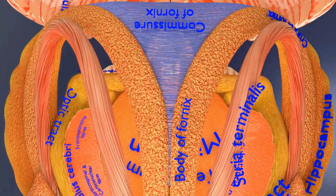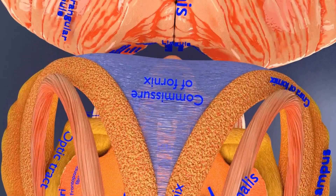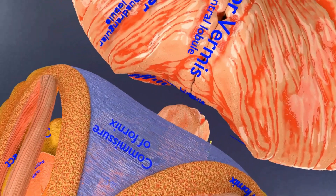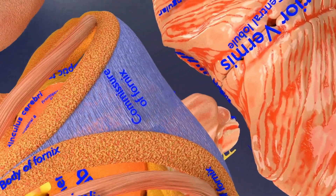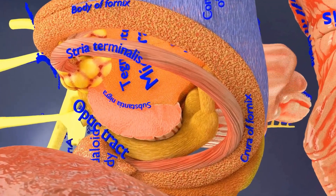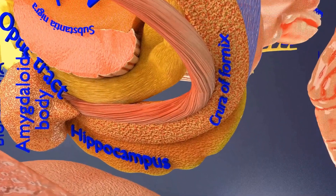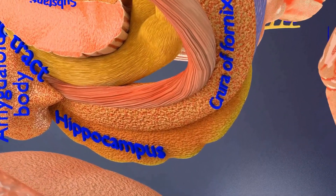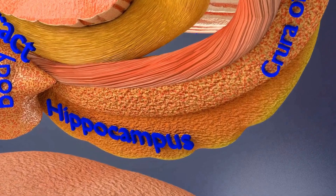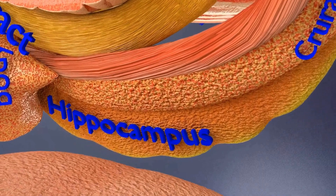Also seen here is the stria terminalis, which is one of the major efferent pathways of the amygdala. The lateral portions of the body of the fornix are joined by the commissure of the fornix, also called the hippocampal commissure. The crura, or posterior pillars of the fornix, are prolonged backward from the body, lying along the concavity of the hippocampus. Damage to the fornix can cause difficulty in recalling long-term information such as details of past events.